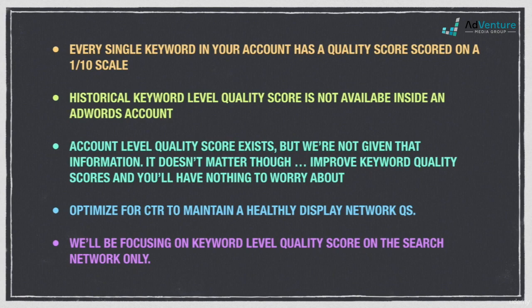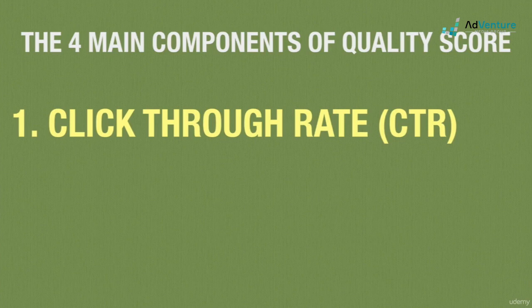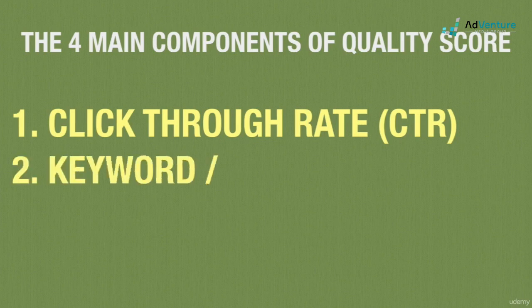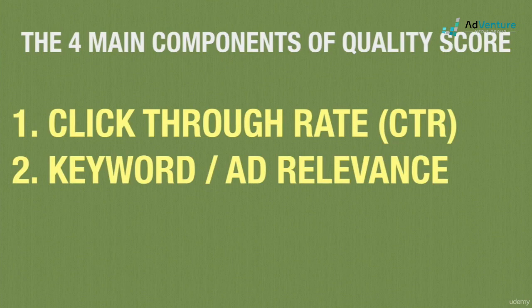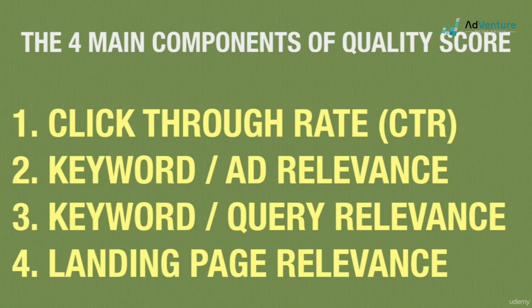Let's dig a little deeper now and take a closer look at the individual components of quality score. There are four main factors that Google considers when calculating keyword-level quality score on the search network. Click-through rate is the number one most important of them all, and we'll get back to that shortly. The second factor is the relevance between the keyword and the actual ad text. The third factor is the relevance between the keyword that triggered the ad impression and the actual query the user typed into the Google search box. And the fourth factor is what we'll call landing page relevance.